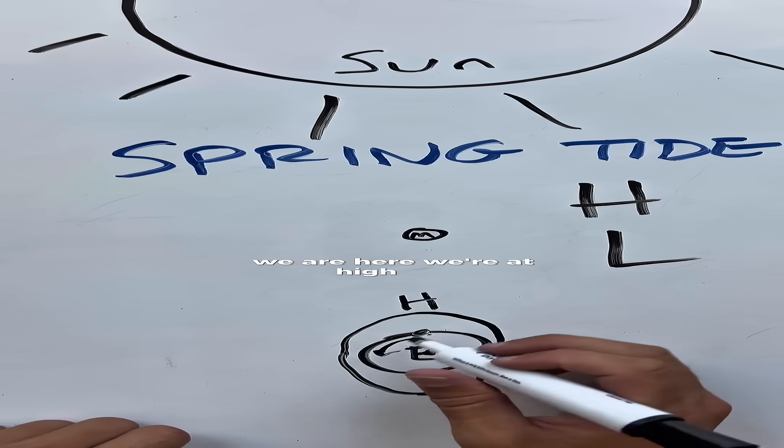24 hours it takes the Earth to rotate. That means here at the high tide, it's going to rotate. This is around the North Pole. We are here, we're at high tide.